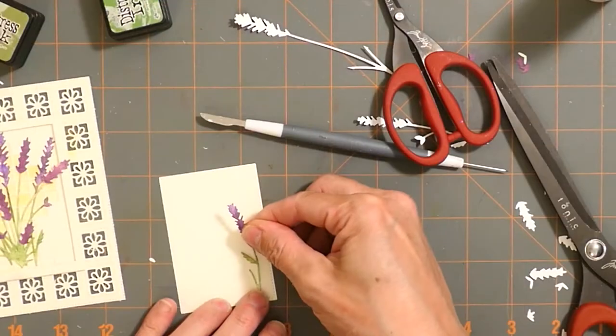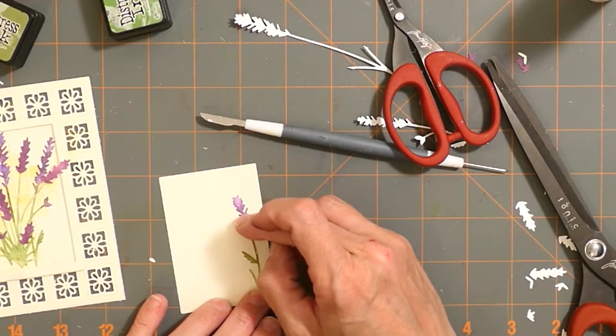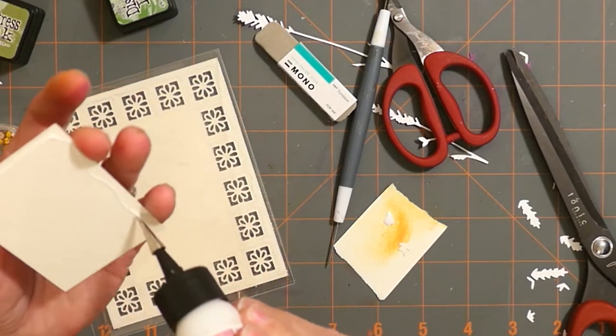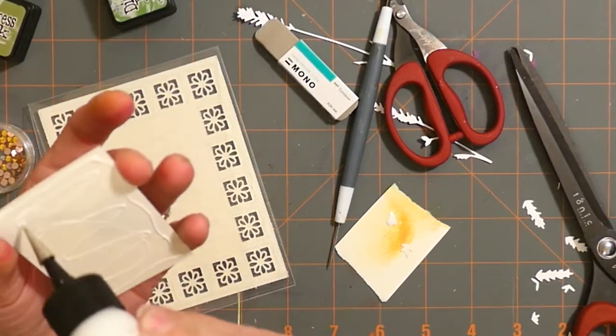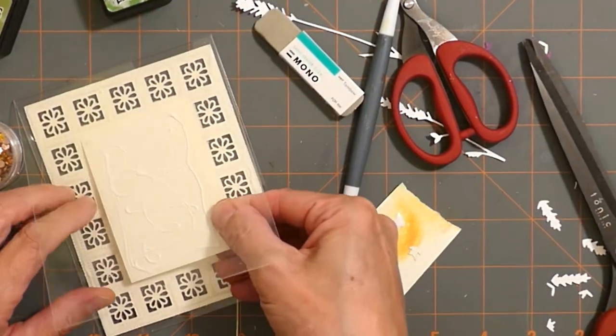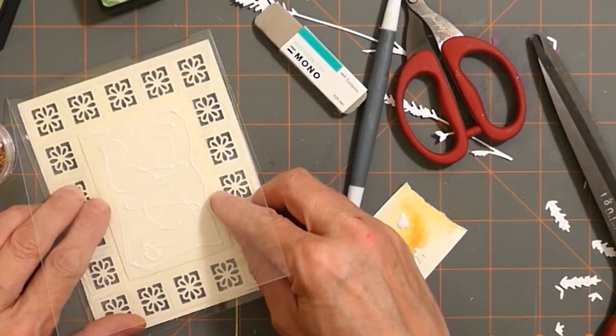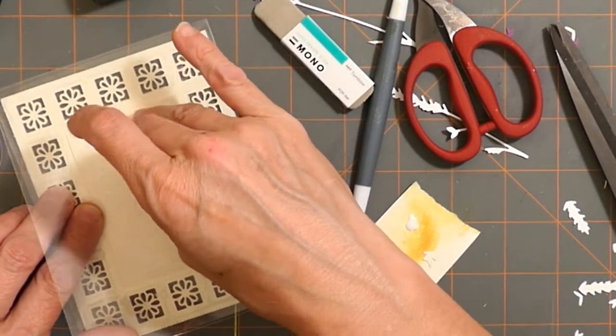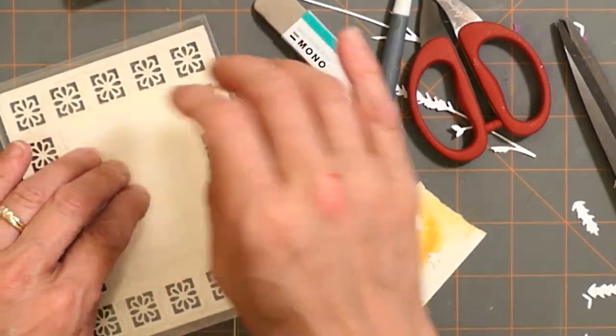I'm making the inside panel with the little sprig of lavender. Again, this could be any die set. It would just be adorable with so many different things. But here's the trick to putting it on the inside: you glue the back of it, lay it down upside down, and you put the acetate over top of the panel.